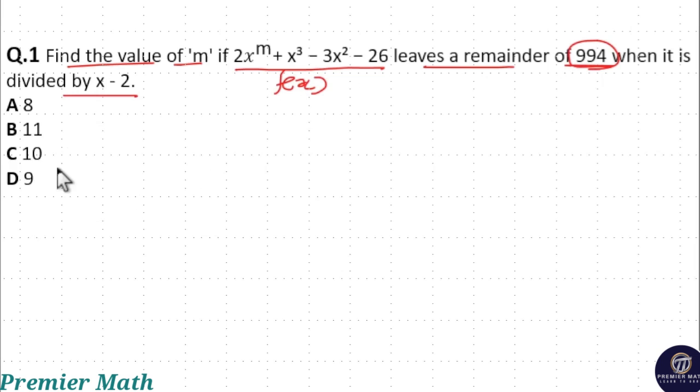Consider this function as f(x). Now when this function f(x) is divided by x - 2, it leaves a remainder of 994.